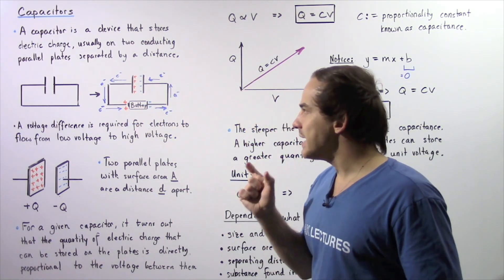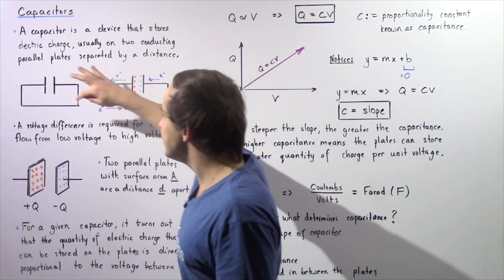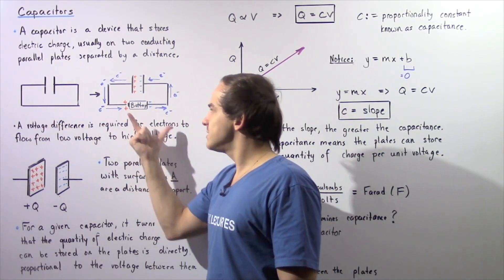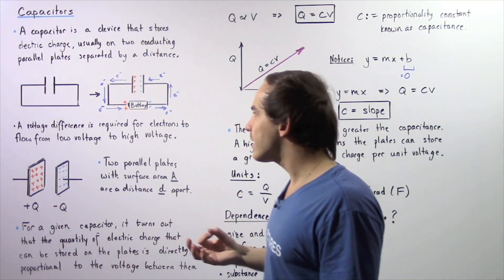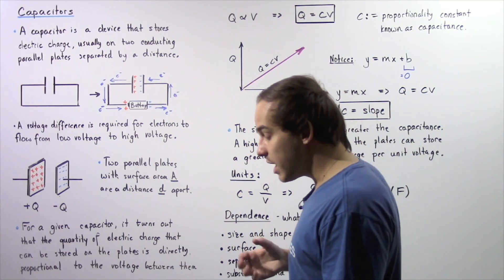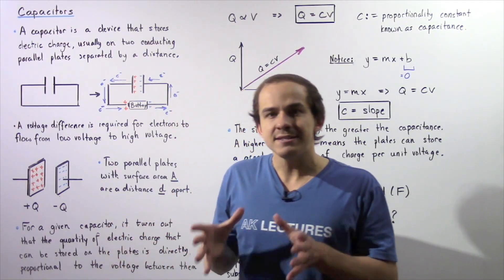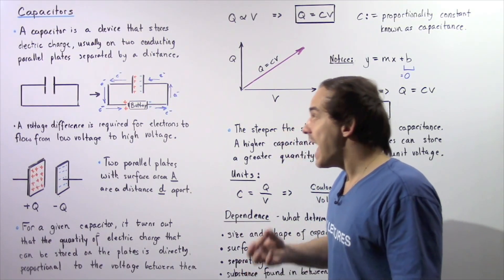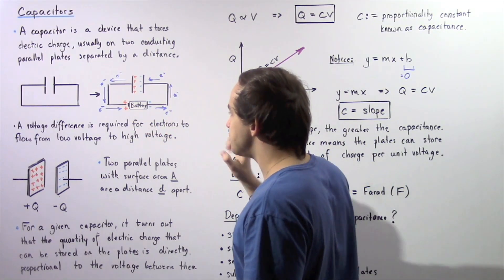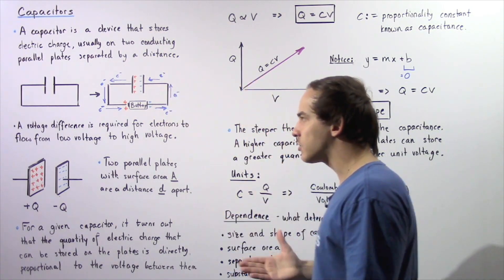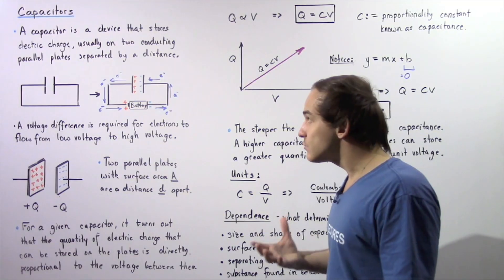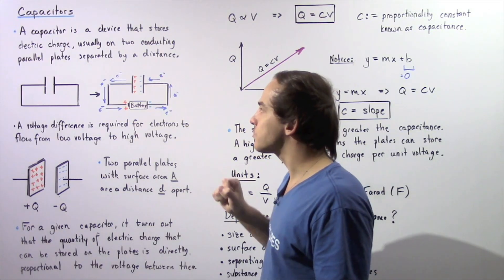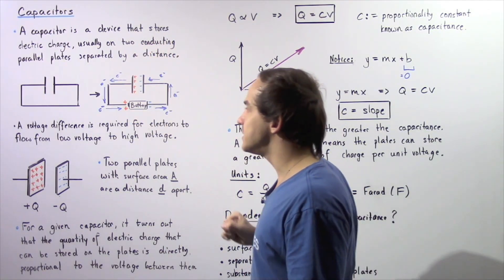Now, what happens if we take a battery and place it into our wire circuit? We essentially insert a battery. A battery is a device that creates an electric potential difference — a voltage difference. Because we now have a voltage difference across our battery, electrons will begin to flow from the parallel plate toward the positive end of the battery, from lower potential to higher potential.